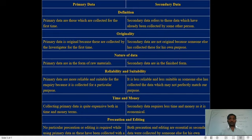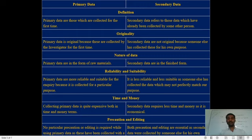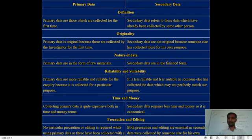Regarding originality: primary data is original because it is collected by the investigator for the first time from the original source. Secondary data is not original because someone else has collected it for their own purpose. Secondary data is collected from a secondary source, not directly from the primary source, which is why secondary data is not original.